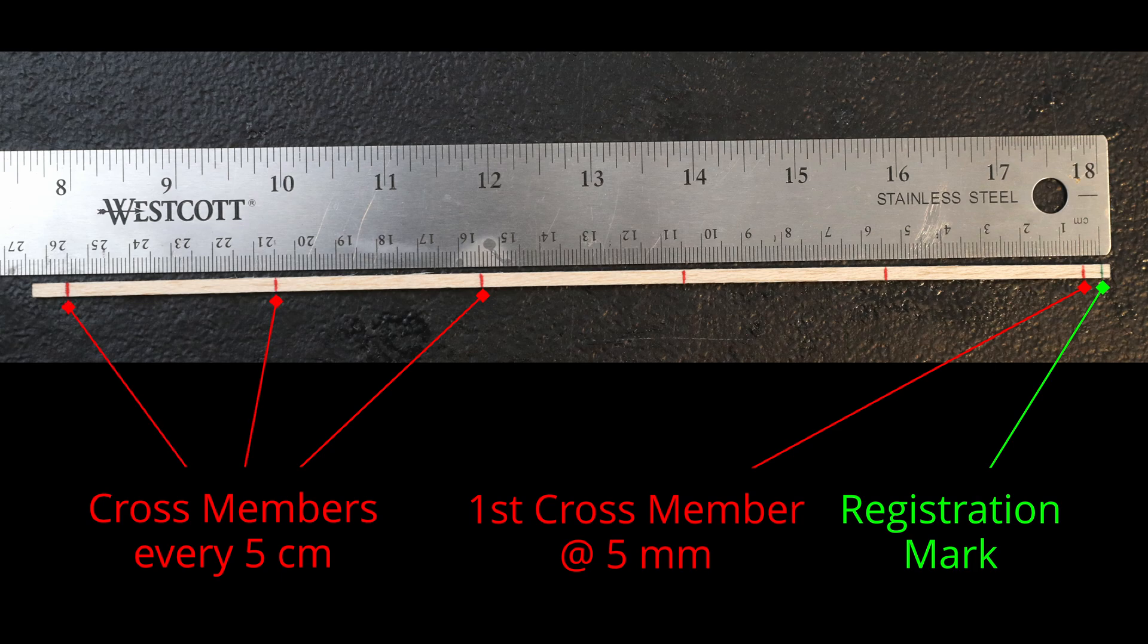Here you can see I marked a green registration mark a couple millimeters from the end. From there, I have clearly marked the crossmember glue points starting at 5 millimeters and then every 5 centimeters to a final point of 25.5 centimeters. I have found this to be an extremely useful technique.